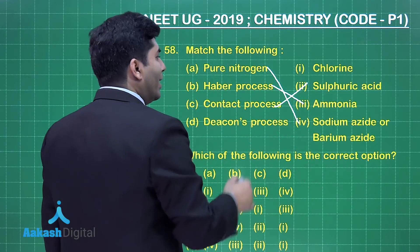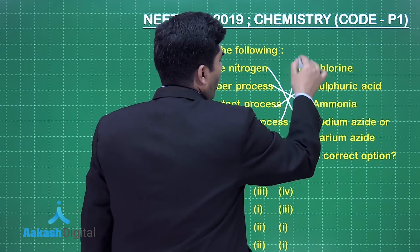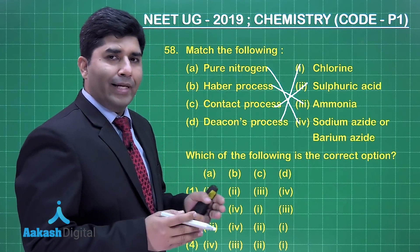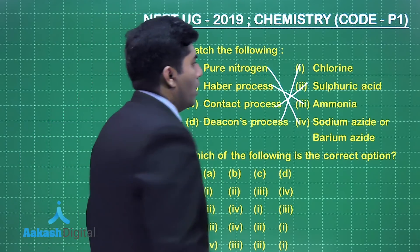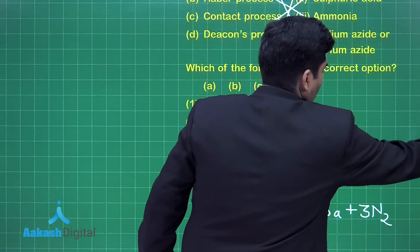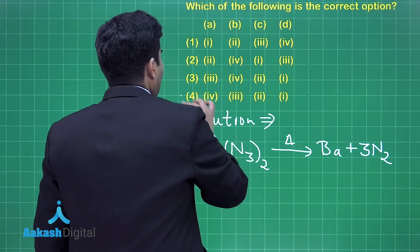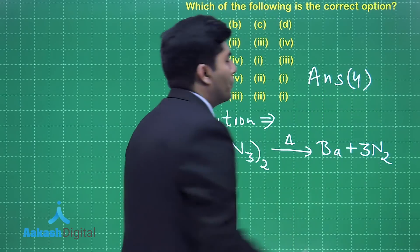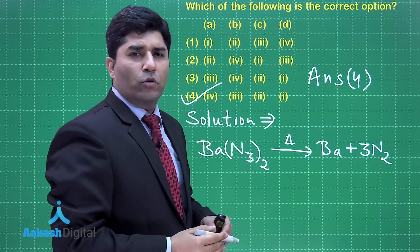Deacon's process is for the preparation of chlorine when HCl is oxidized. So our correct answer is option number 4. Let's move on to the next question.